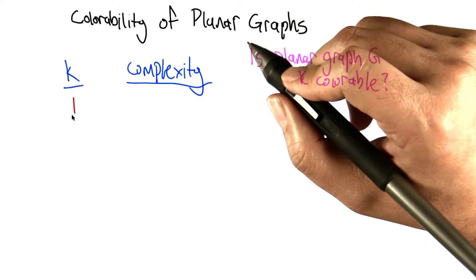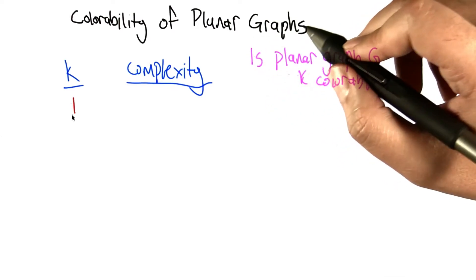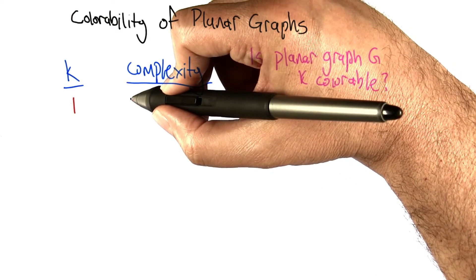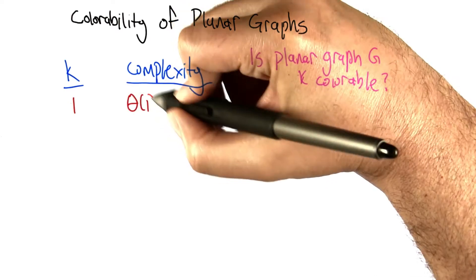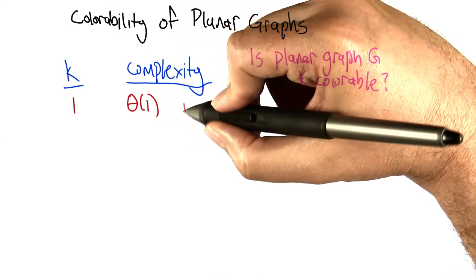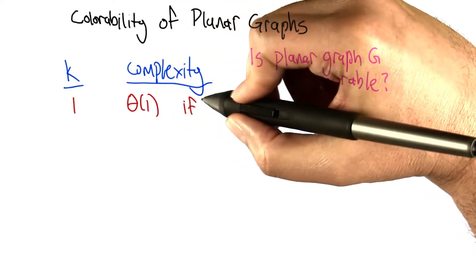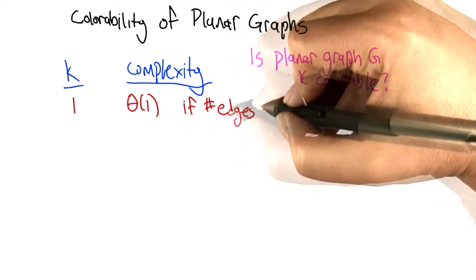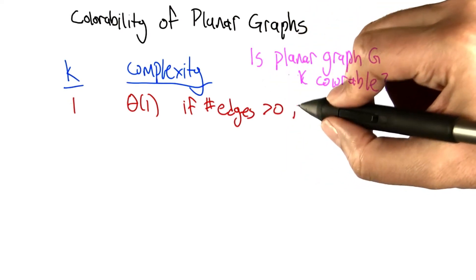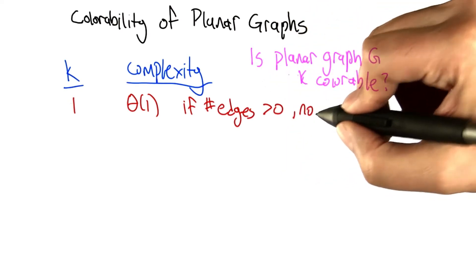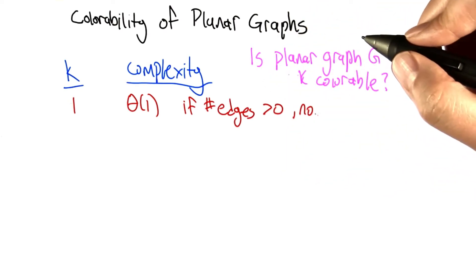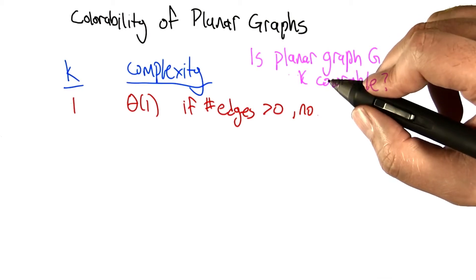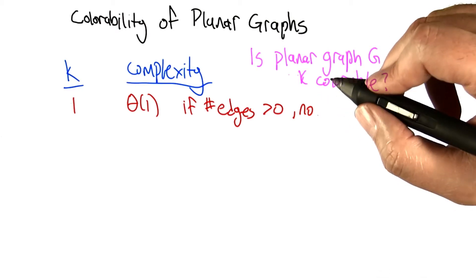If K is 1, what kind of graphs are 1-colorable? Graphs with no edges. So we can answer this question in constant time. If the number of edges is greater than 0, the answer is no — as soon as there's a single edge, you're going to need 2 colors to color the nodes.